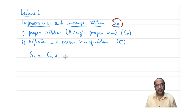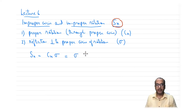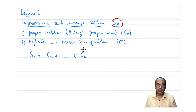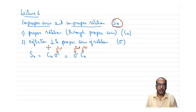Sn is a combination of Cn and σ, and it does not really matter in which order you apply the individual operations. You can apply Cn first and σ second, or you can apply σ first and Cn second.